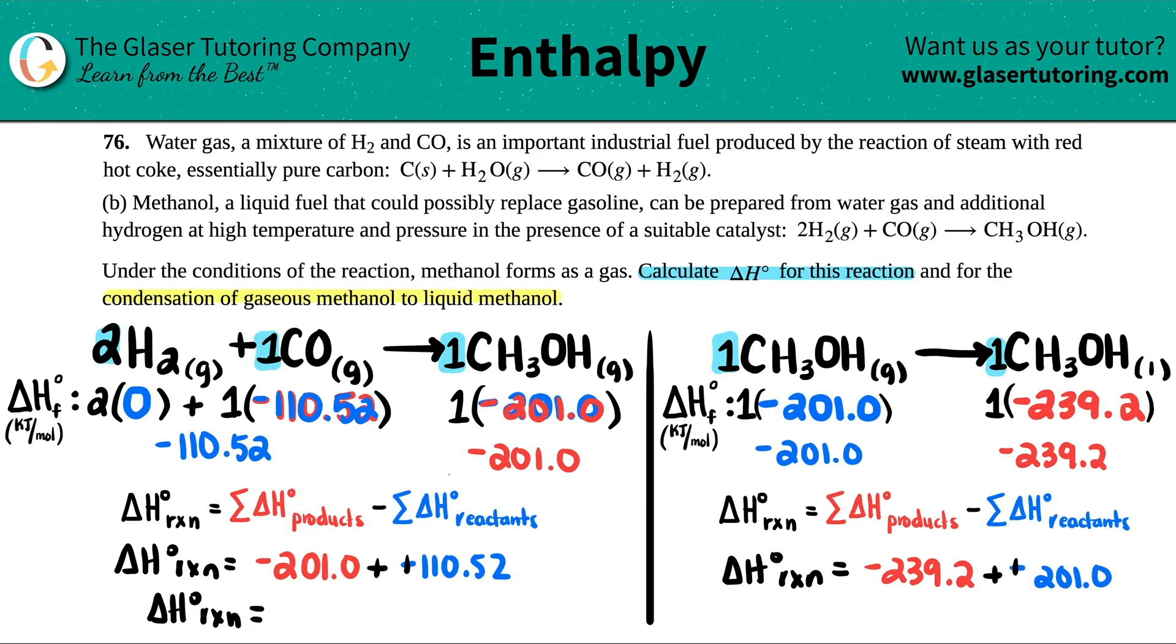Let's see what would be the delta H for this reaction on the left-hand side. Negative 201.0 plus 110.52, I get negative 90.48 kilojoules per mole. That's the unit for delta H. So we're going to release 90.48 kilojoules.